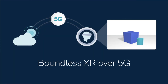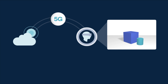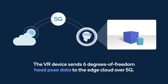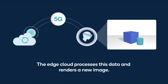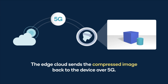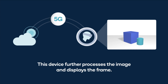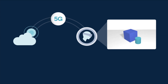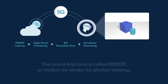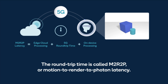We now illustrate the processes involved in a Boundless VR system. The VR device sends six degrees of freedom head pose data to the edge cloud over 5G. The edge cloud processes this data, renders a new image, and then sends the compressed image back to the device over 5G. The device further processes the image before displaying it. The time taken for this roundtrip process is called M2R2P, or motion to render to photon latency. The 5G roundtrip time is a key component of M2R2P.